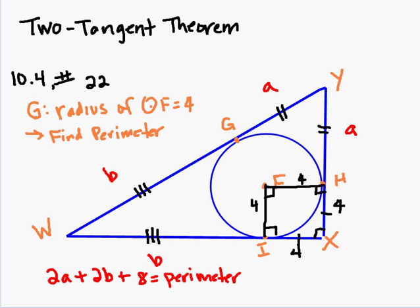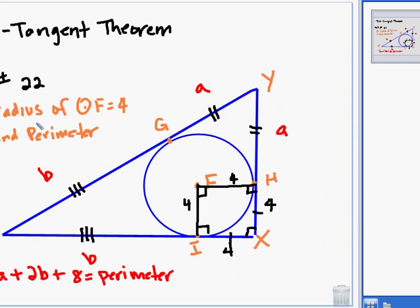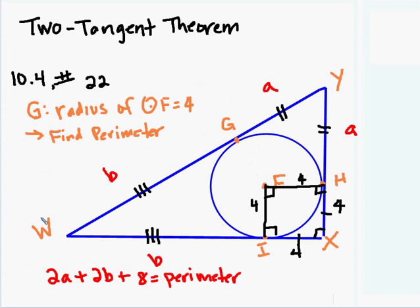Now one other thing that was given as part of this problem is that WI is equal to 20.